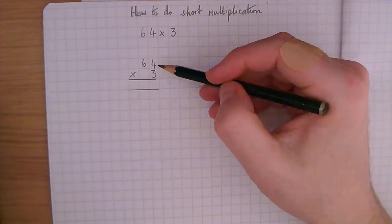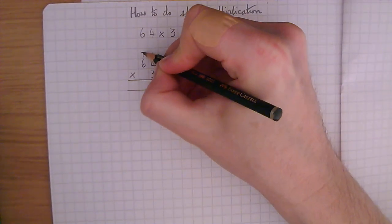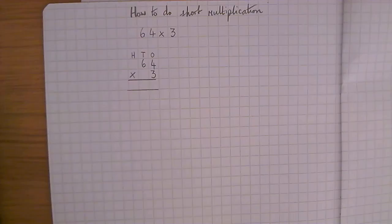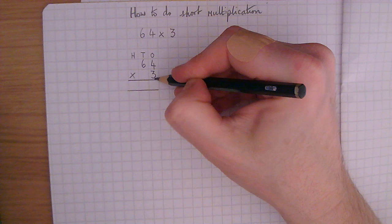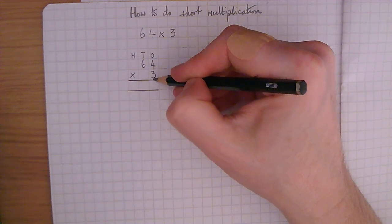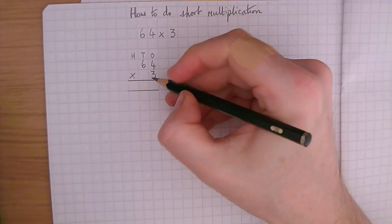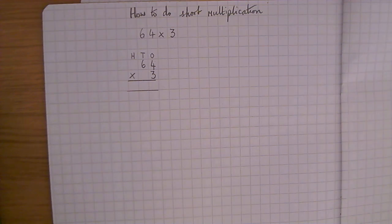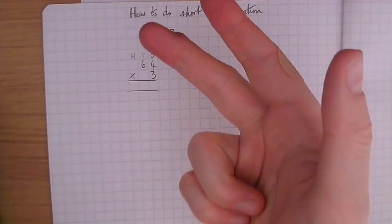So this is how we set it out. We're going to write in our ones here, our tens and our hundreds, just to remind ourselves. And we're going to do 3 times 4. So we always start with the ones. So we're going to multiply the ones by the ones. 3 times 4. Now if you're not sure what 3 times 4 is, use your fingers. 3, 6, 9, 12.